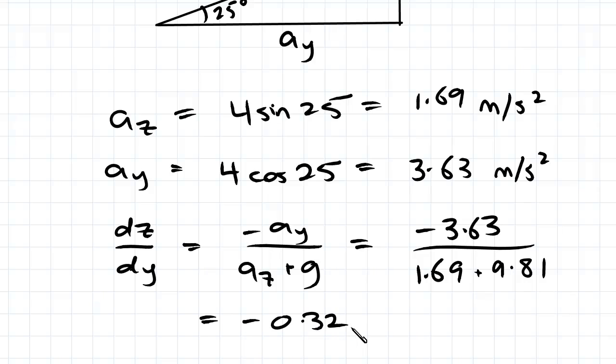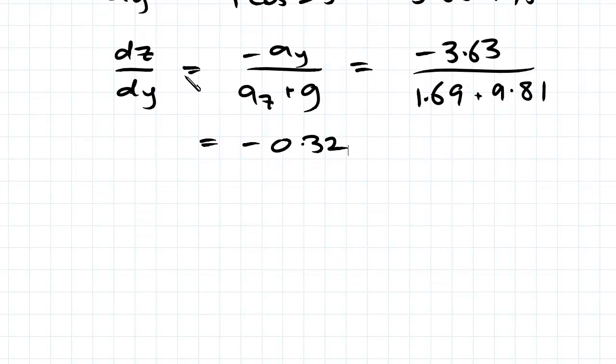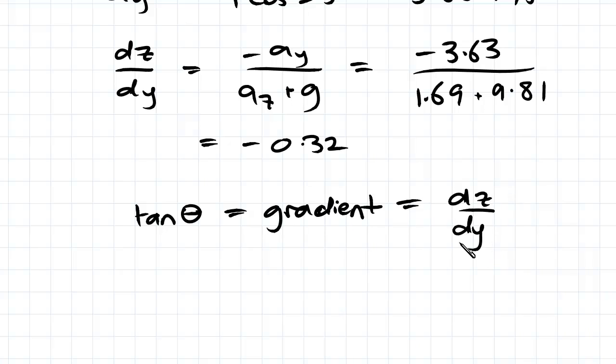So we know that the acceleration equation here relates the fluid acceleration to the surface of the fluid. So the surface of the fluid has gradient according to dz on dy. And gradient is given by tan theta. And that equals dz on dy. So dz on dy was negative 0.32. Tan theta will therefore equal negative 0.32.